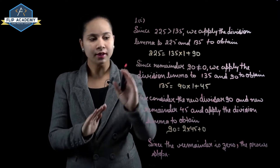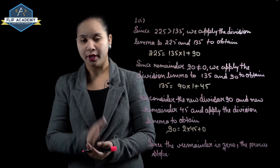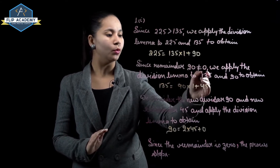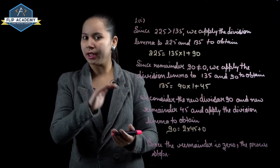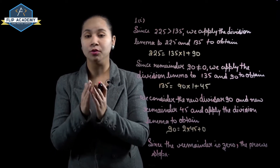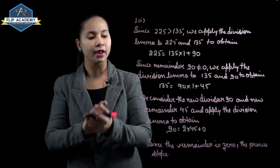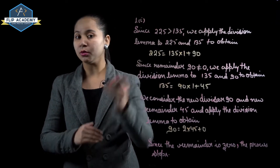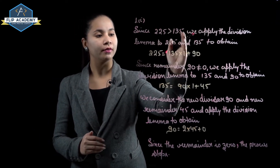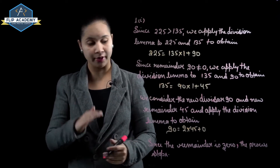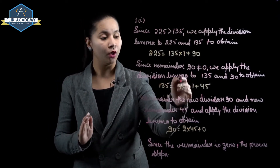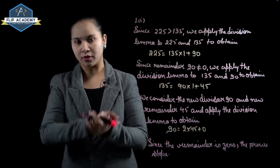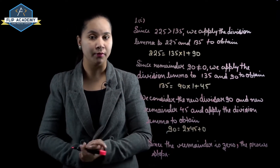Since the remainder 90 is not equal to 0, we apply the division lemma again to 135 and 90. So 135 = 90 × 1 + 45. Here 135 is the dividend, 90 is the divisor, 1 is the quotient, and 45 is the remainder. We continue this process until the remainder becomes 0.